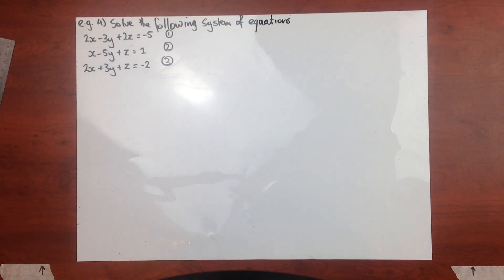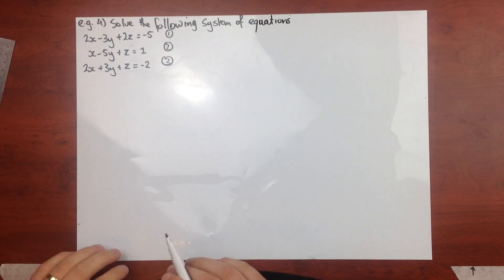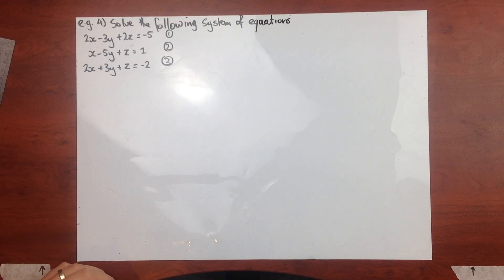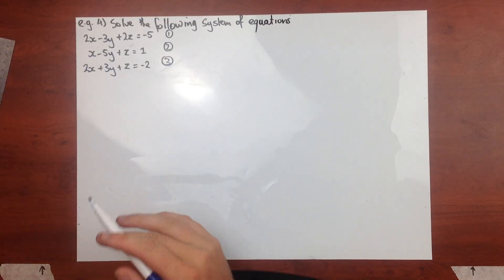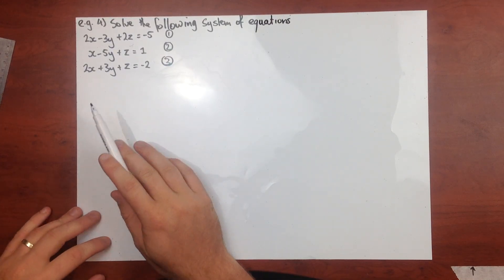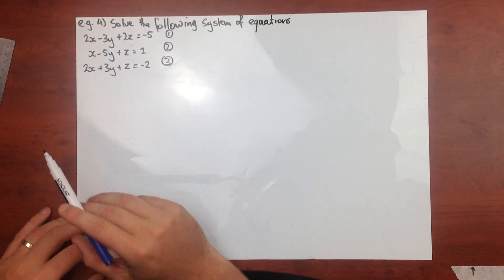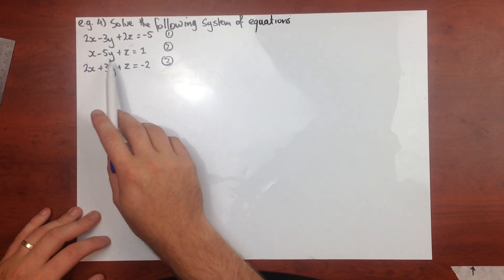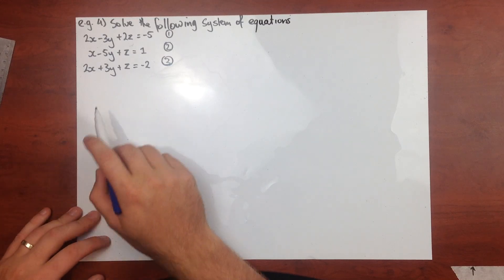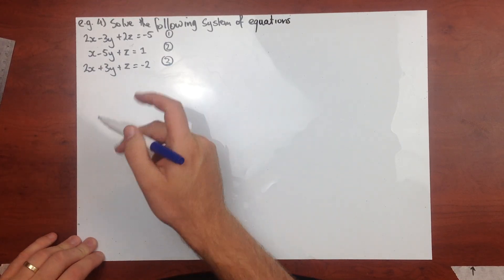Example four: solve the following system of equations with three variables. There are a few approaches — substitution, elimination, or a combination. I prefer substitution: rearrange, substitute in, rearrange again, substitute in again, then backtrack. This middle equation works nicely for rearranging in terms of z.